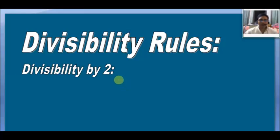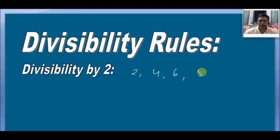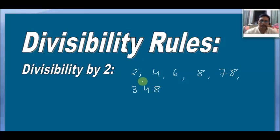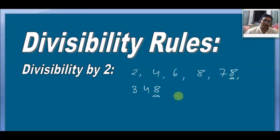Any even number is divisible by 2. For example: 2, 4, 6, 8, 78, 348 — all these numbers are even numbers. Why is a number considered even? Because the unit place digit is an even number.